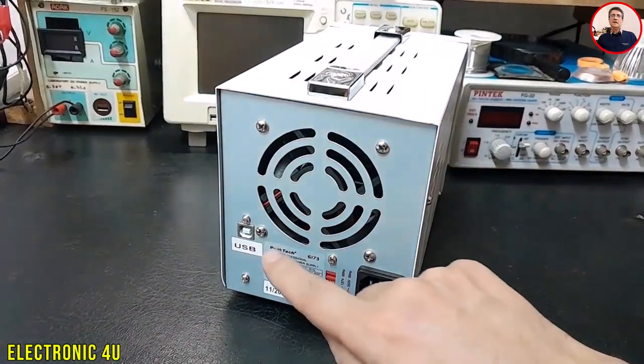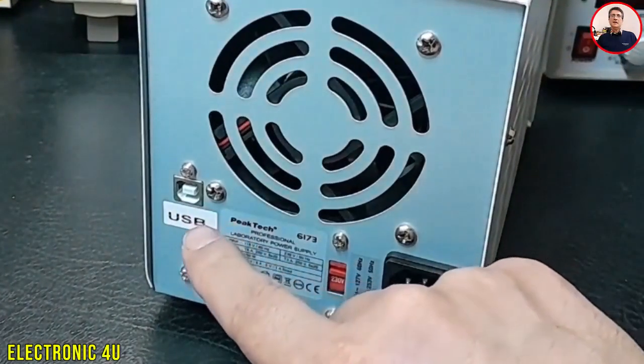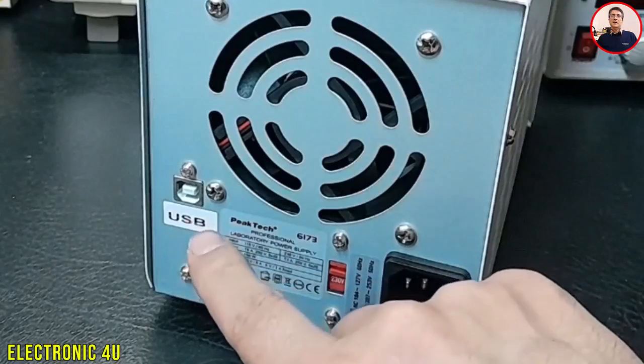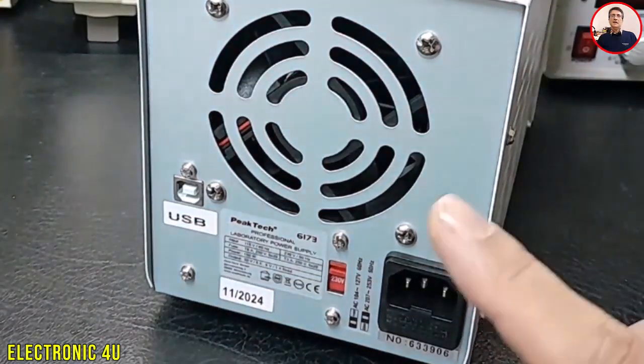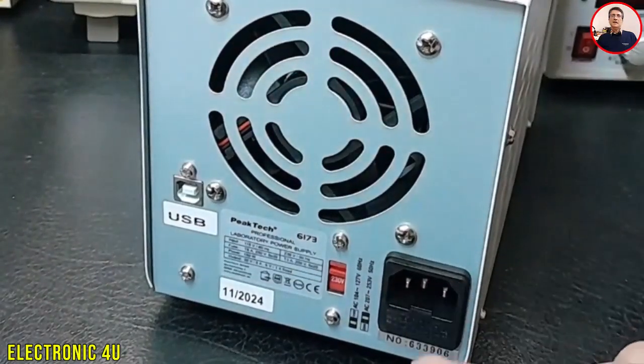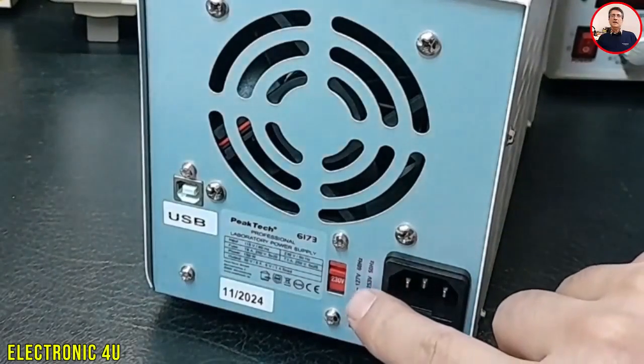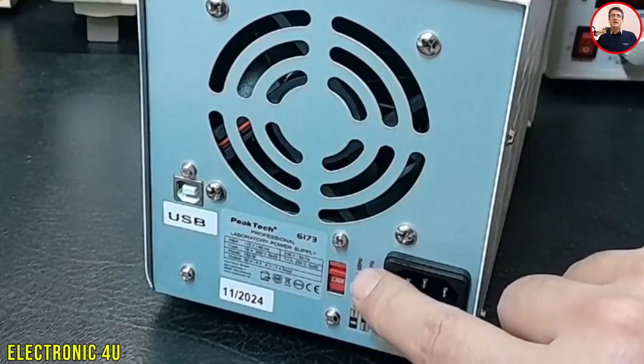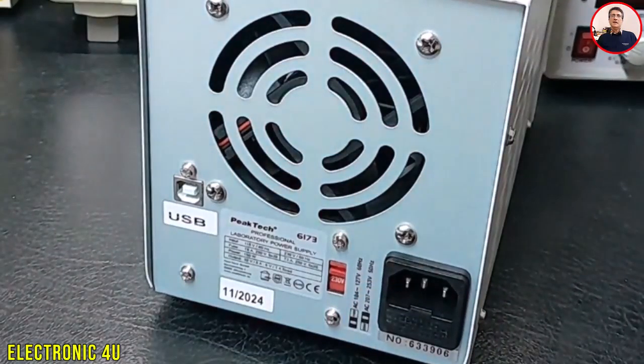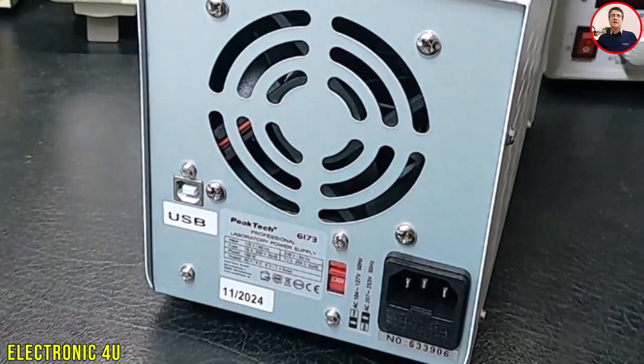Also, this is the USB port that we use to connect the device to a computer and control it with software. A very important point for people living in different countries - this is the input voltage selector switch. Make sure it's set to the correct voltage before turning on the device. For us, 220 volts.